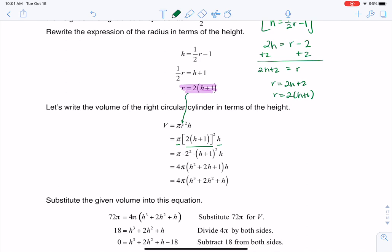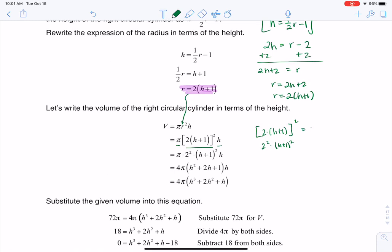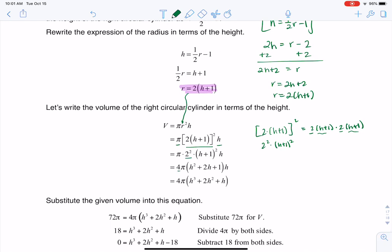And then when I take a look at 2 times h plus 1, and I'm going to square the whole thing, because we have inside that parenthesis multiplication, we're allowed to distribute that power, that exponent, so this will become 2 squared times h plus 1 squared. And you could think of this if it helps, as this is 2 times h plus 1 times 2 times h plus 1. So you see, I really do have 2 squared and then h plus 1 squared. And then I just start to simplify that a little bit. 2 squared is 4, right?